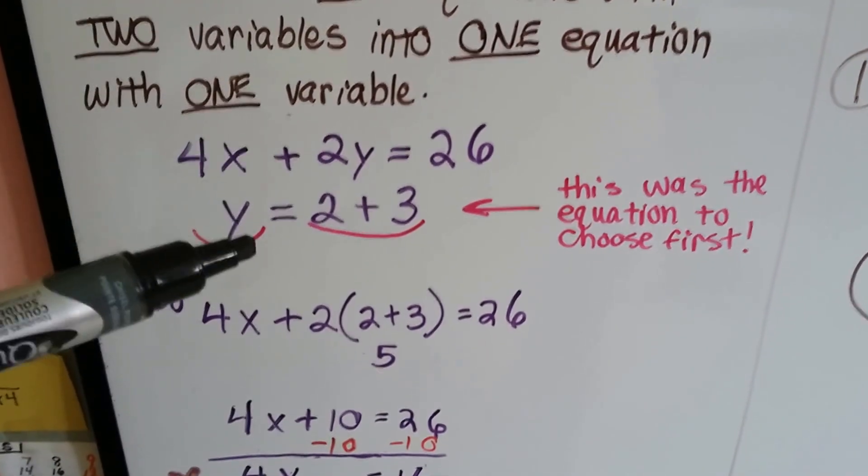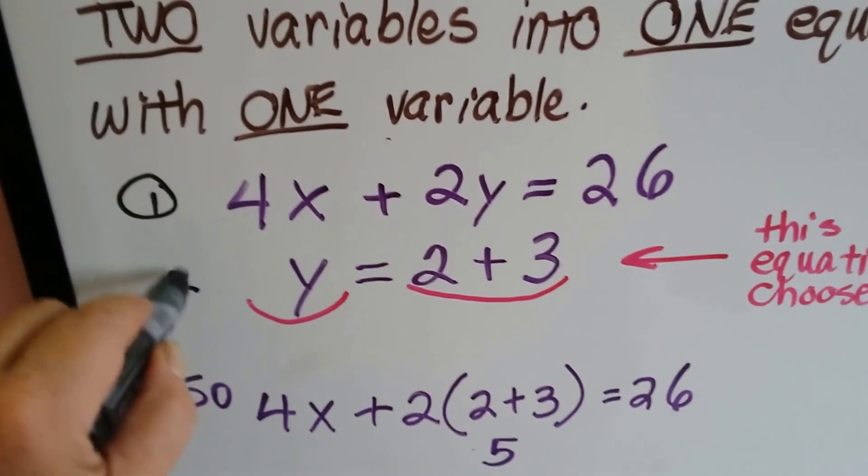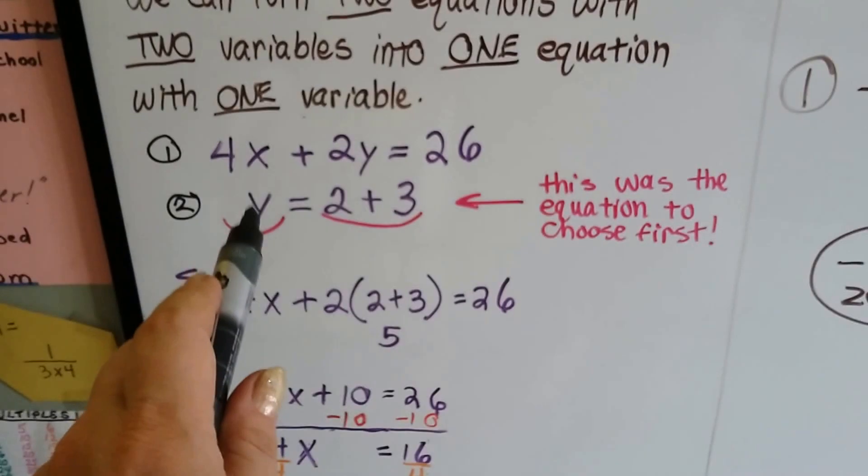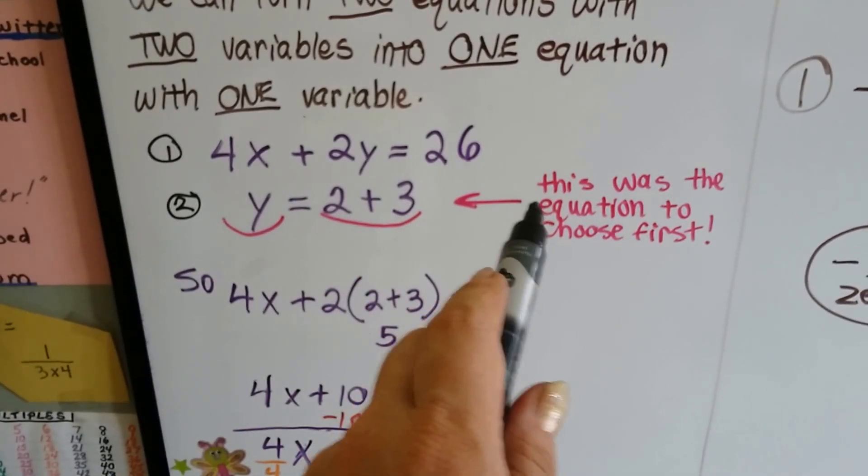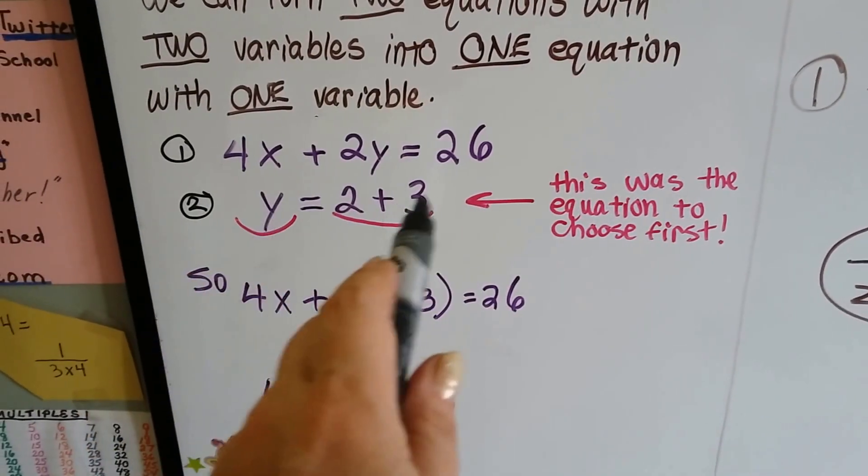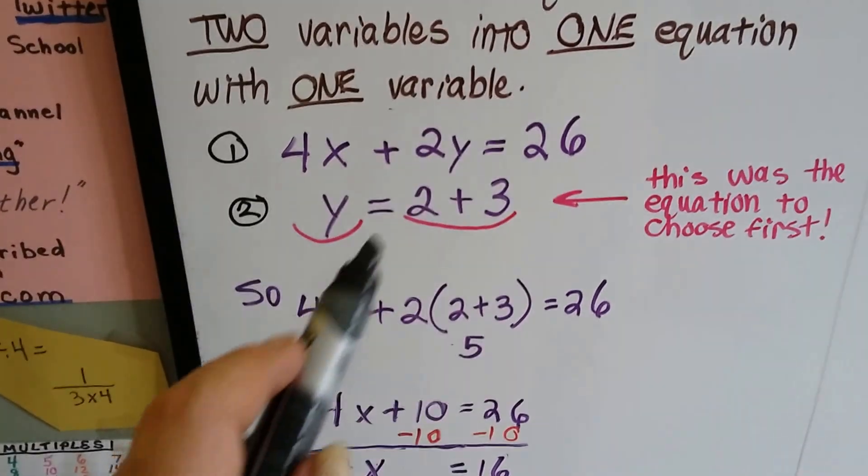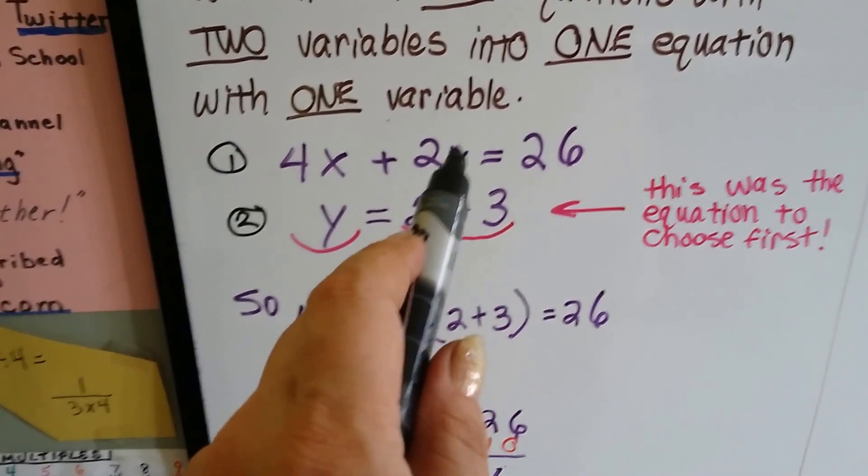So look at this equation and this equation. This is one equation, 4x + 2y = 26, and this is the second equation, y = 2x + 3. We can see that this one already has y equal to something, so that's the first one to choose because we already know what y is. It's 2x + 3. So we're going to plug this 2x + 3 into this equation where the y is.